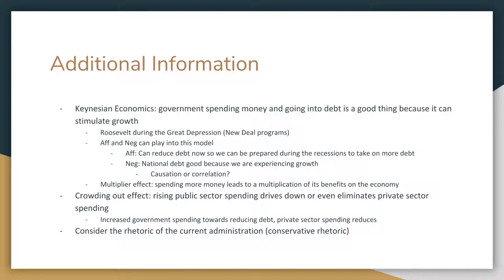Here are some important economic theories that are going to be bounced around during rounds. Number one is Keynesian economics — essentially the idea that government spending is good because it can stimulate economic growth. This is what Roosevelt used during the Great Depression when he came up with all of the New Deal programs. He argued that by borrowing funds and going into more debt, it's fine because you're going to stimulate economic growth, and when you stimulate growth, not only will the average American benefit but you'll also be able to pay back that debt because you generate more profit.